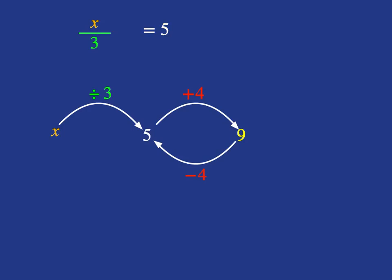Now, we need to undo the dividing by 3. And we know that the way to undo dividing by 3 is use the inverse operation, which is to multiply by 3. And what we've done here in the picture, we're also doing in the equation. And when we multiply by 3, we see we get to our answer of 15.